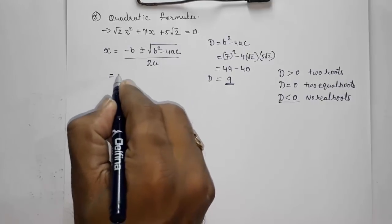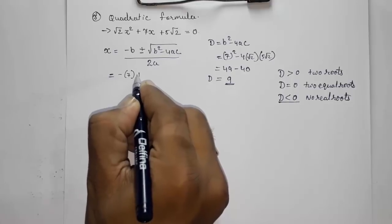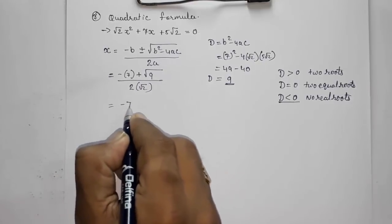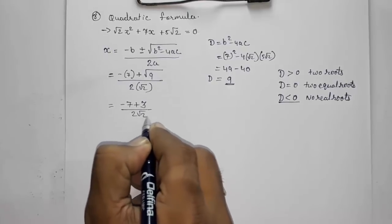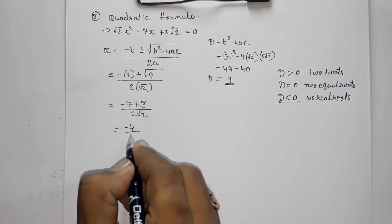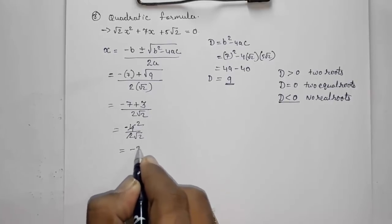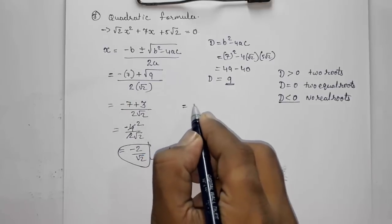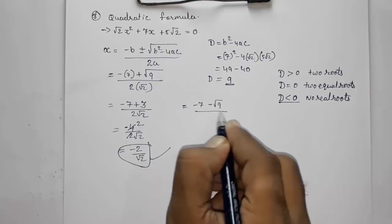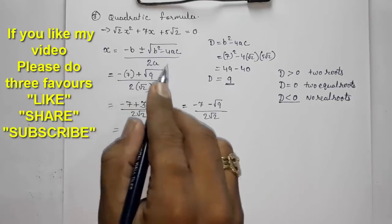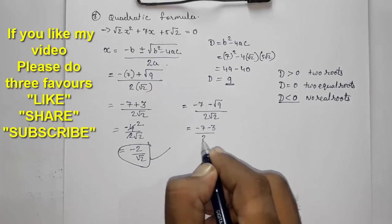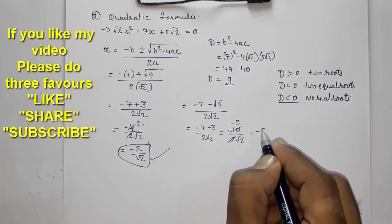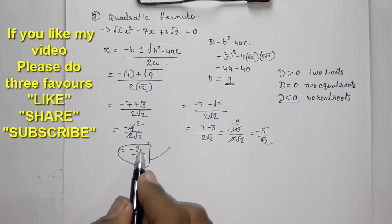Using the formula with the positive sign: x = (−7 + √9) / (2√2) = (−7 + 3) / (2√2) = −4 / (2√2) = −2/√2. Using the negative sign: x = (−7 − 3) / (2√2) = −10 / (2√2) = −5/√2. These are the two roots.